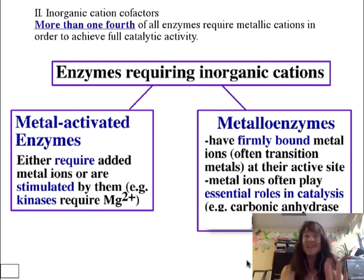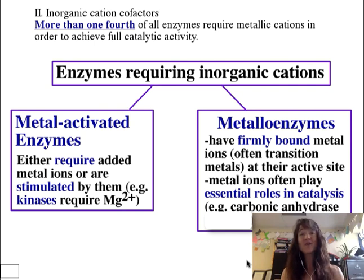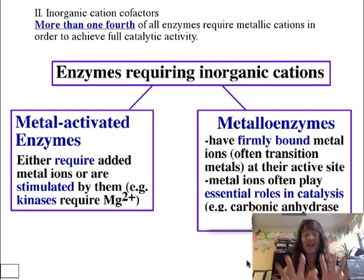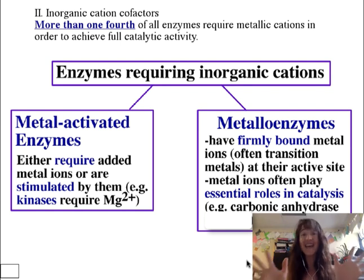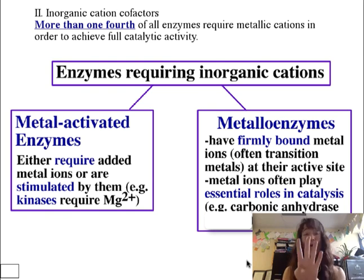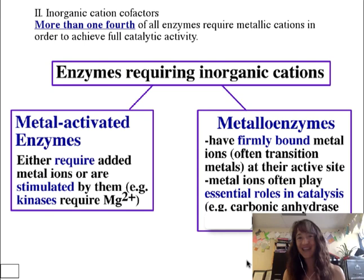Let's zoom in to the active site of carbonic anhydrase and look at the reaction mechanism made possible by not only the zinc cation, but — if being a zinc metalloenzyme was not enough to make you love carbonic anhydrase — get this: it also has not one, not two, not three, but four histidine residues at the active site. Let's see what goes down with those histidines.